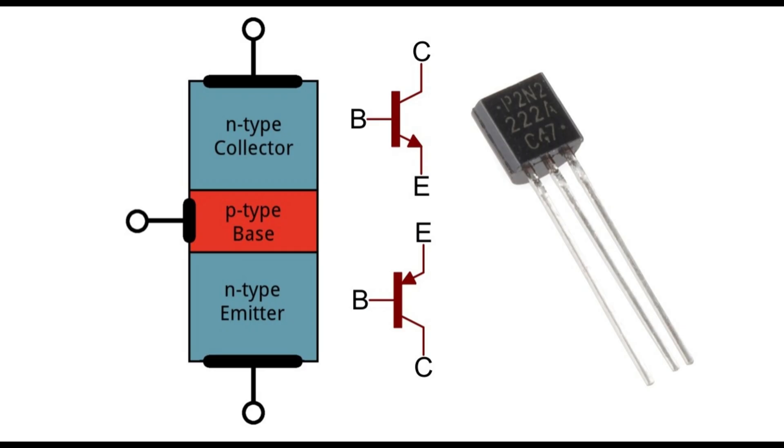A bipolar transistor allows a small current injected at one of its terminals, the base, to control a much larger current between the remaining two terminals, making the device capable of amplification or switching.